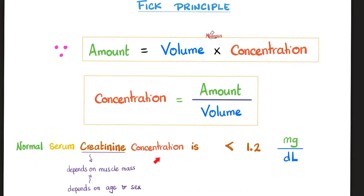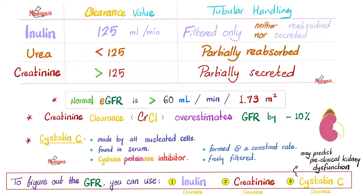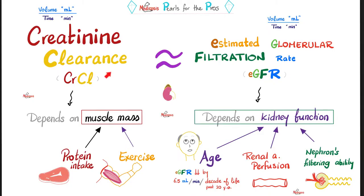Therefore, concentration equals amount over volume. That's why the normal serum creatinine concentration is anything less than 1.2, let's say 0.7 milligrams per deciliter. Creatinine is filtered and then partially secreted. This partial secretion makes it overestimate GFR by about 5 to 10 percent.